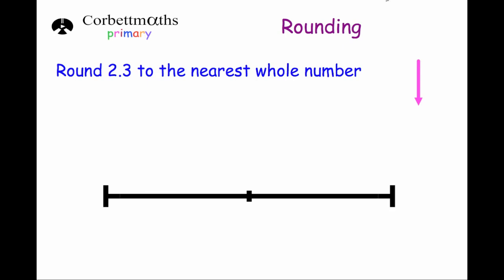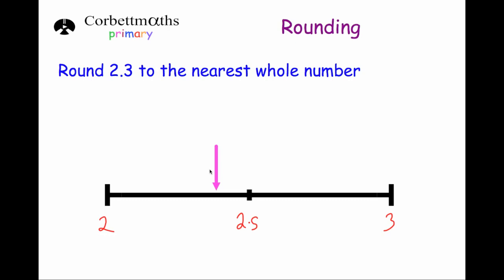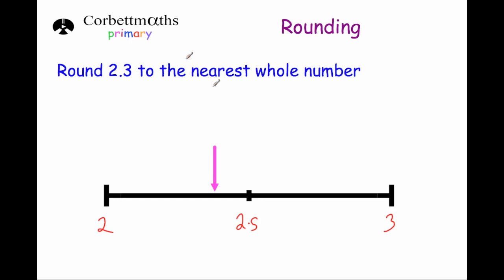Our first question is to round 2.3 to the nearest whole number. The nearest whole numbers to 2.3 are 2 and 3, and in the middle of 2 and 3 is 2.5. On our number line, 2.3 would be over here somewhere because 2.3 is below 2.5. So that means 2.3 is closer to 2 than it is to 3, so our answer is 2.